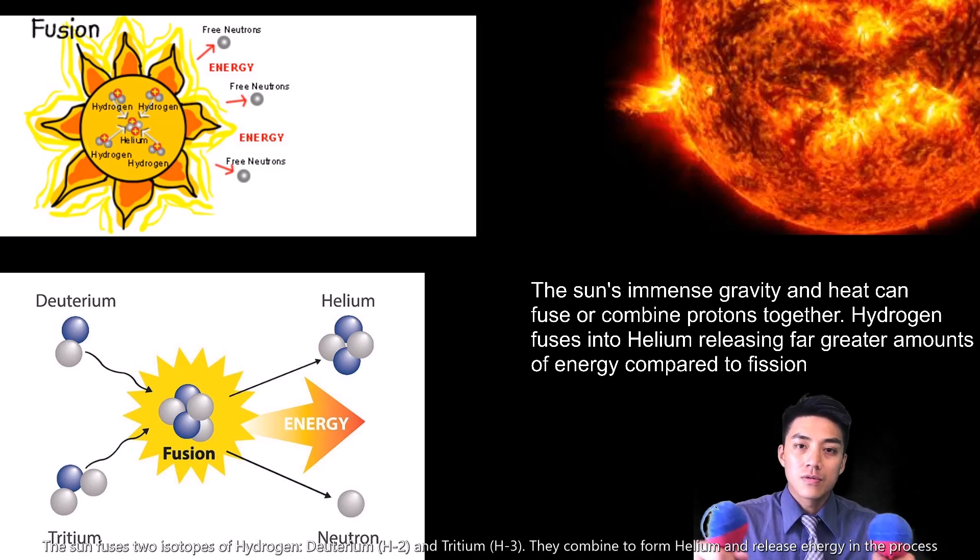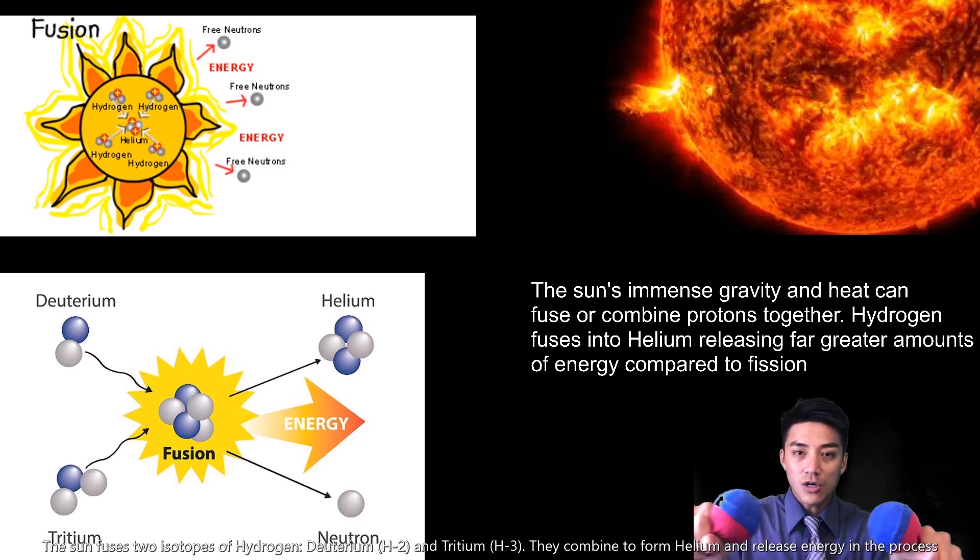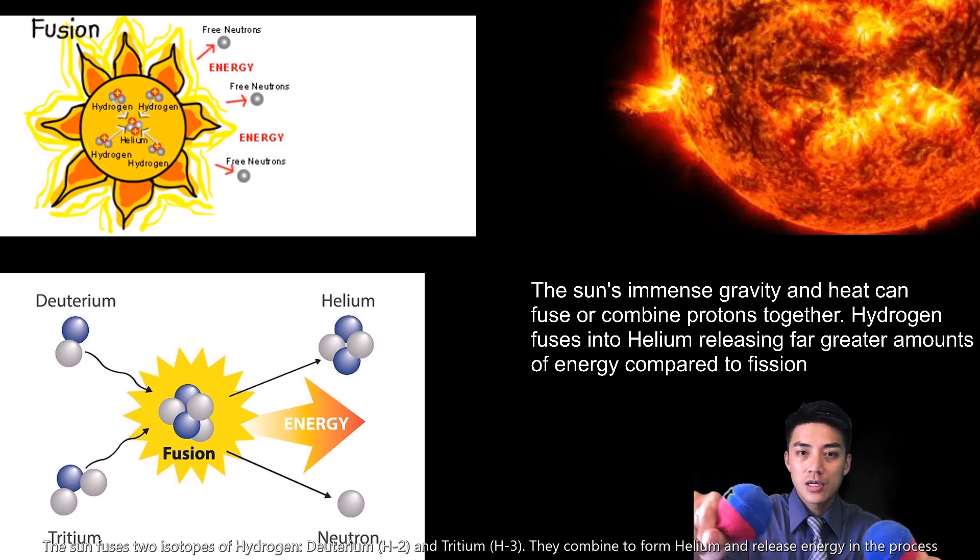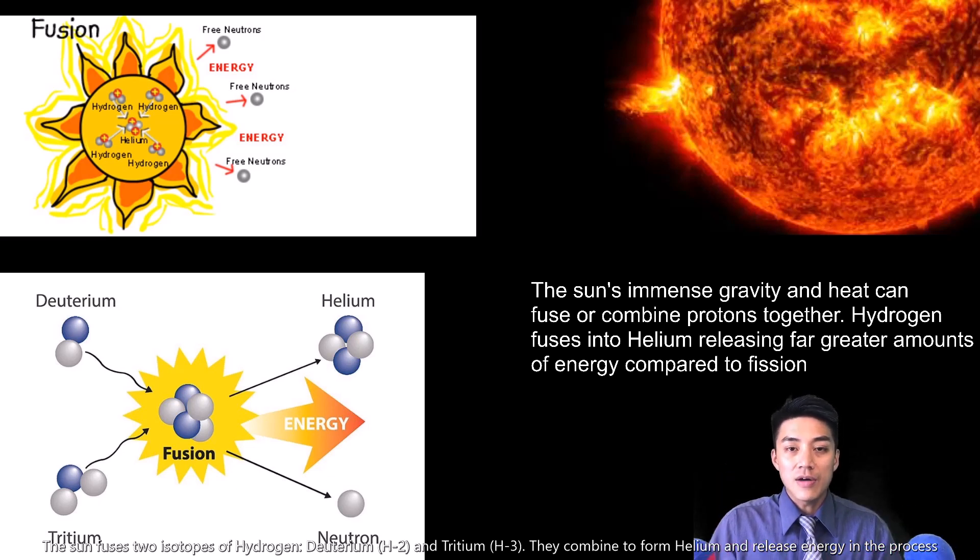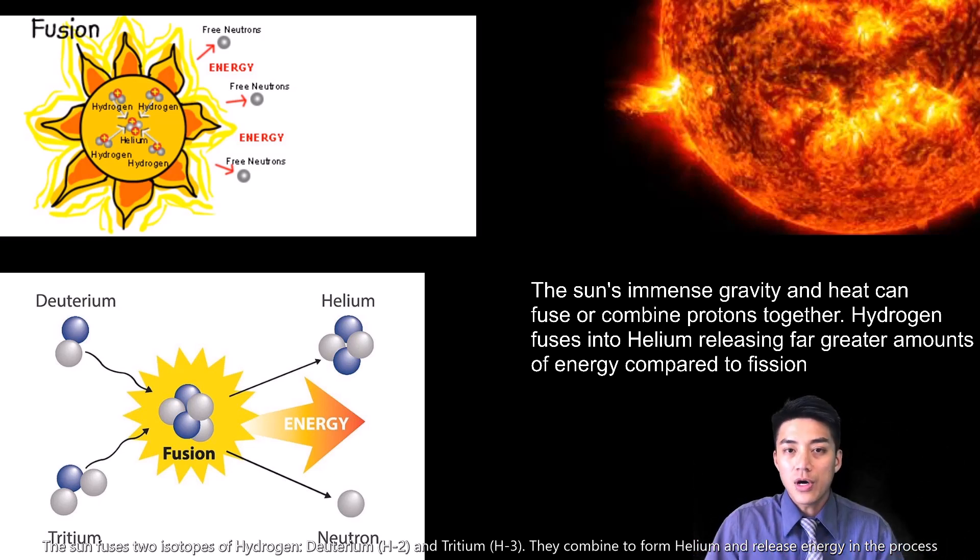The sun is mainly hydrogen, which are just one proton apiece. So remember, protons have the same charge, so they tend to repel each other because they both have positive charges. Now with the immense heat and gravity of the sun, it can actually fuse these protons together, forming helium. And in the process of doing so, it releases a lot of energy.